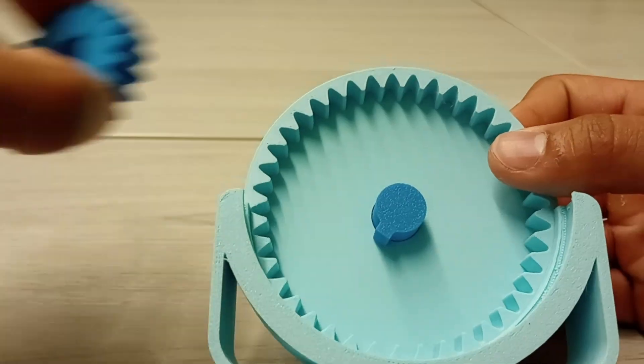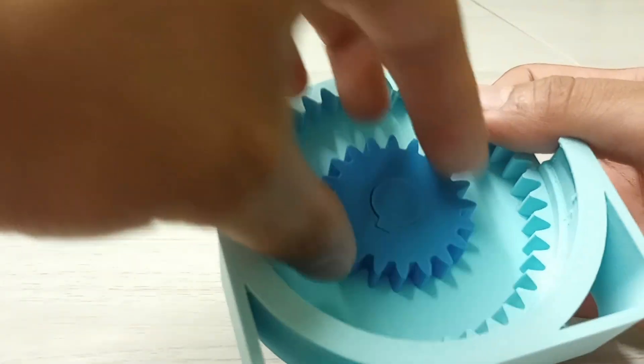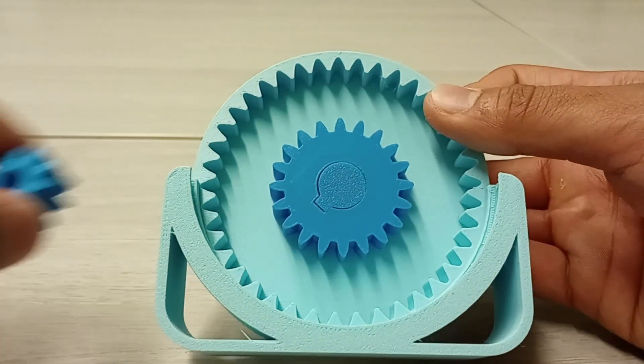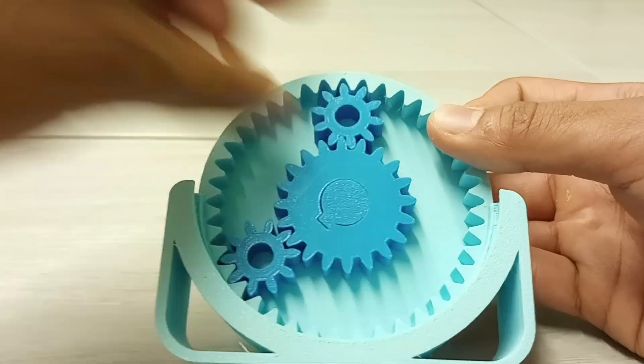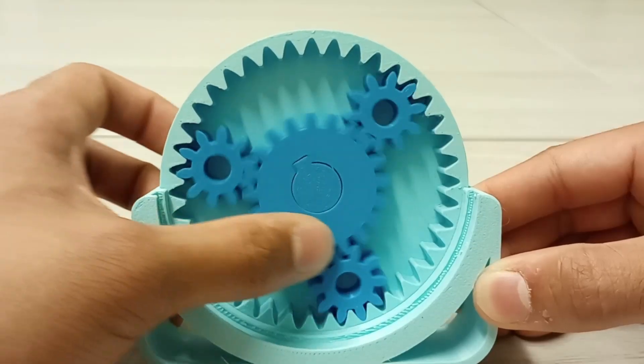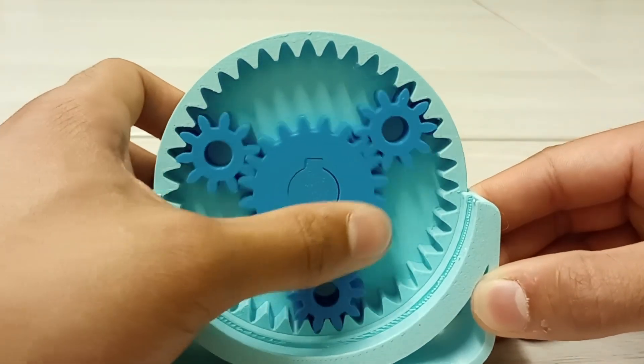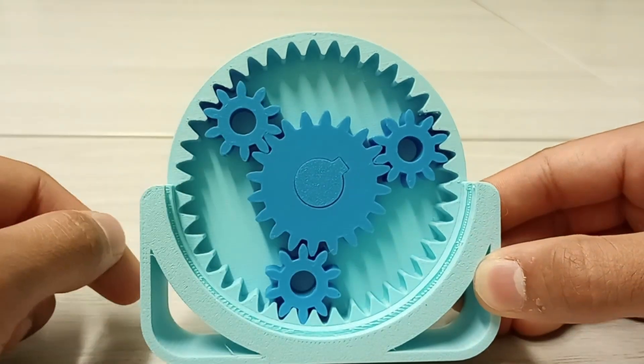Shaft A is connected to sun gear A, and sun gear A meshes with the first set of planetary gears. And these planetary gears will spin around in a slower speed than the sun gear in the middle would.